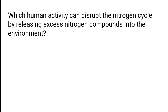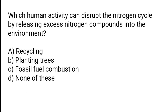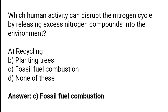Which human activity can disrupt the nitrogen cycle by releasing excess nitrogen compounds into the environment? The options are recycling, planting trees, fossil fuel combustion, or none of these. The correct answer is option C — fossil fuel combustion can disrupt the nitrogen cycle by releasing excess nitrogen compounds into the environment.